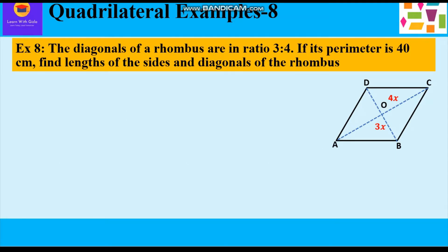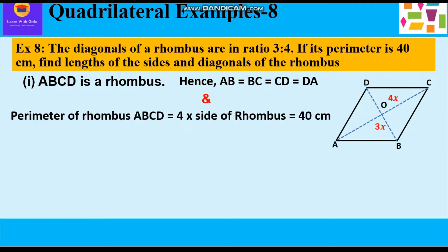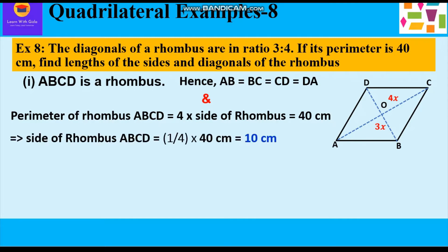Since ABCD is a rhombus, all sides are equal: AB = BC = CD = DA. The perimeter of rhombus ABCD is given by 4 × side, which equals 40 centimeters. So the side of the rhombus is 40 ÷ 4 = 10 centimeters. The length of each side of the rhombus is 10 centimeters. Now let us calculate the diagonals.